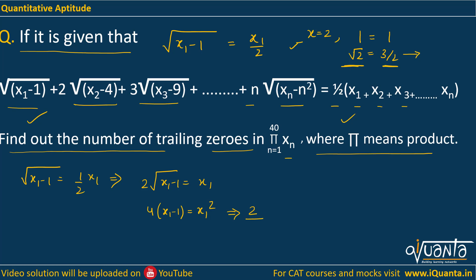Similarly you can compare the second term 2√(x₂-4) with x₂/2 and you will get x₂ = 8. If you do the same with x₃ term then you will be getting x₃ = 18. If you do that with x₄ you will be getting 32.